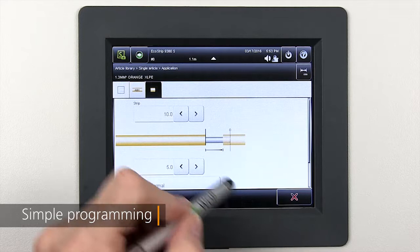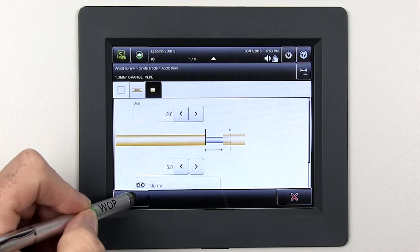With the release of the EcoStrip 9380, Schleuniger's S-On user interface is now the standard across its entire line of cut and strip products.